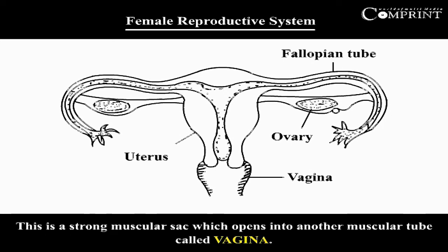The uterus is a strong muscular sac which opens into another muscular tube called the vagina.